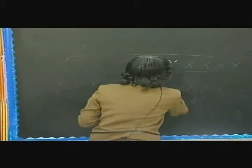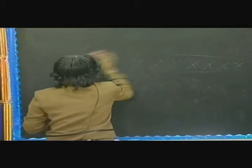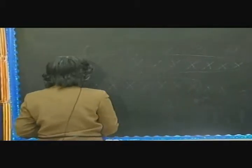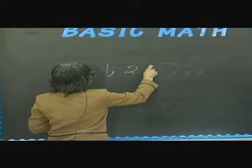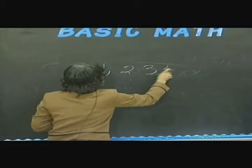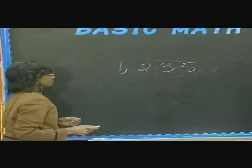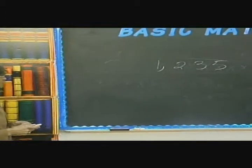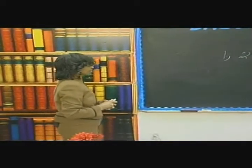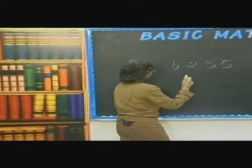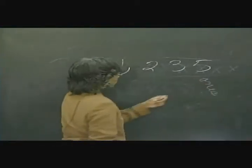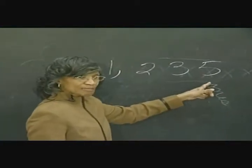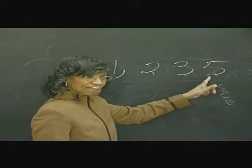Let's look at the number that you're familiar with: 1,235. The structure of this number is this. On the far right, we have the ones place, and the digit 5 is in the ones place. That means we have five ones.